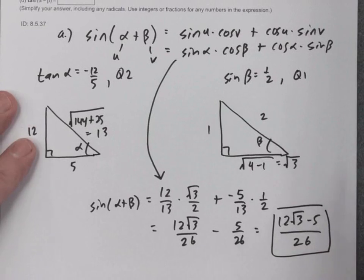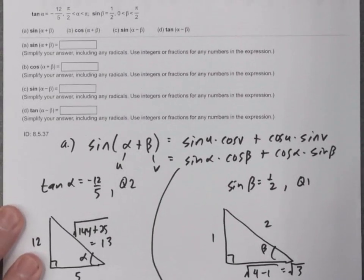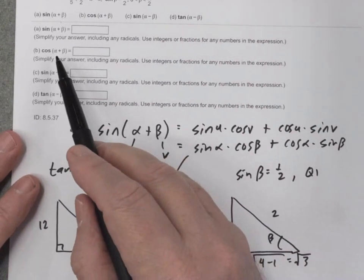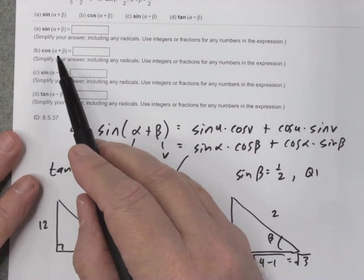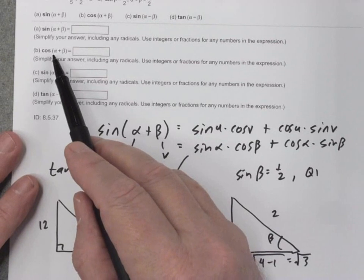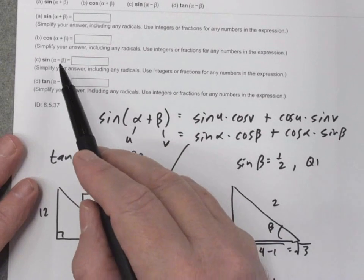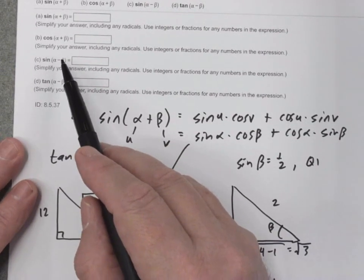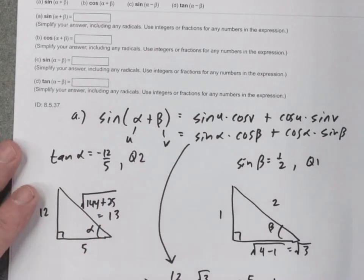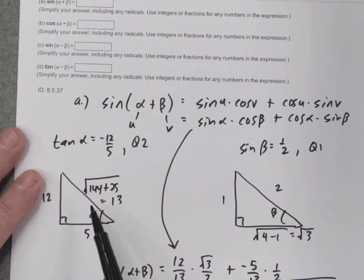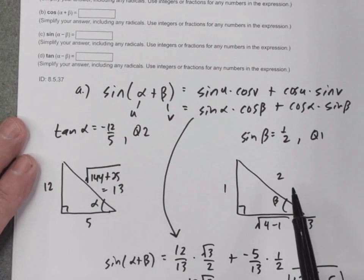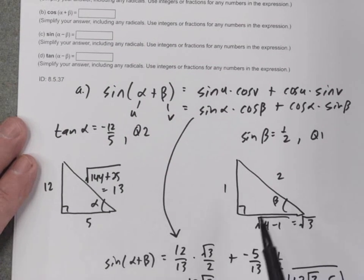Then once again, for the rest of these, you just go get the formula for cosine of alpha plus beta, then the formula for sine of alpha minus beta, and so on, using the triangles for alpha and beta to give you what you need.